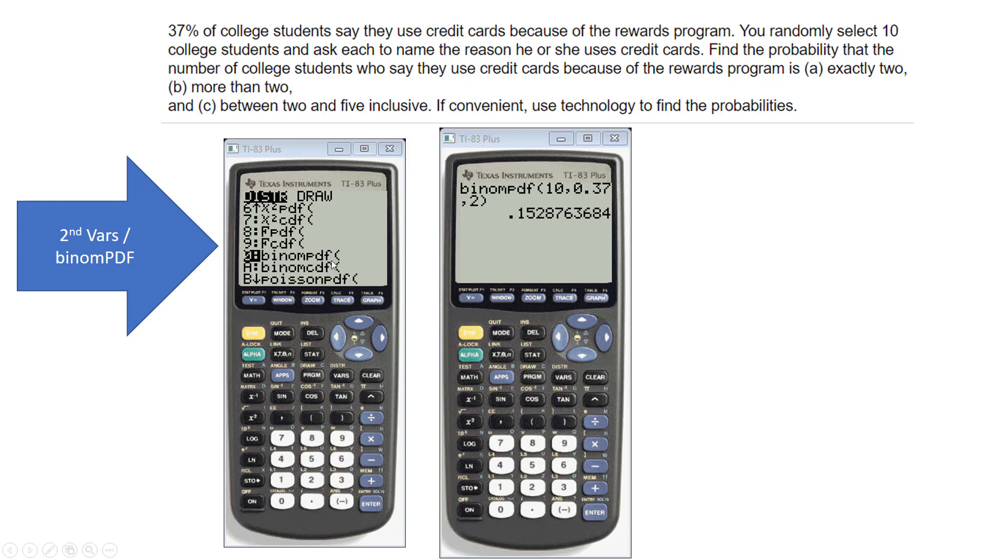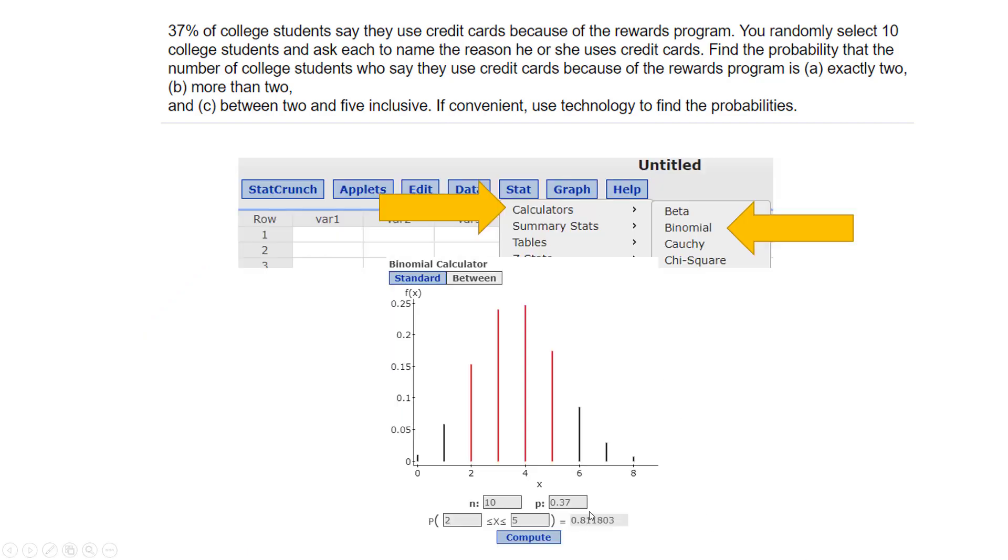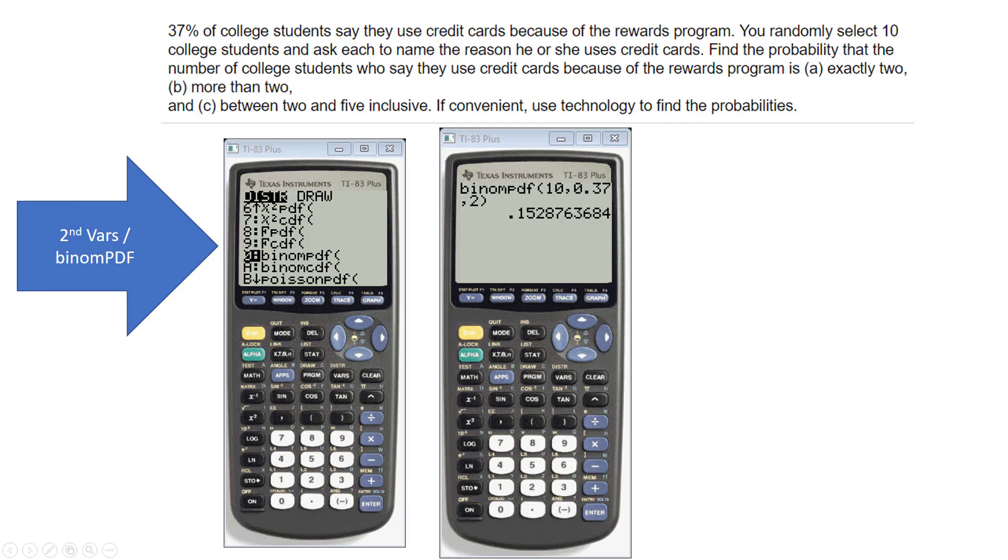The order is n comma p comma x - the number that you're looking for. If you wanted to do between 2 and 5, you could write 2, then you do 3, then you would do 4, then you would do 5, and then you would just simply add all of those values up to get that answer. Hope that helps.